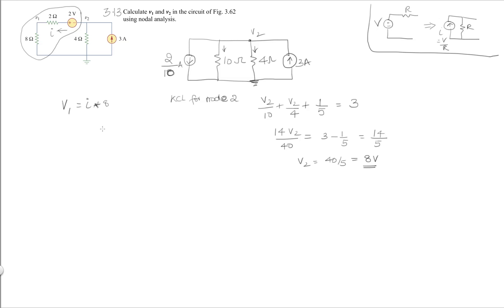Now, how do I find out what I is? One simple way is that I is the current going through this branch, which is going to be the sum of these two currents. We know what V2 is — V2 is 8. So it's going to be 8 divided by 10 plus 2 divided by 10, which gives I equals 10 over 10, which is 1 amp. So if I know that I is 1 amp, then V1 is going to be 8 times 1, which is 8 volts.